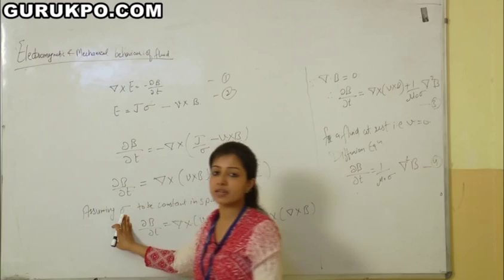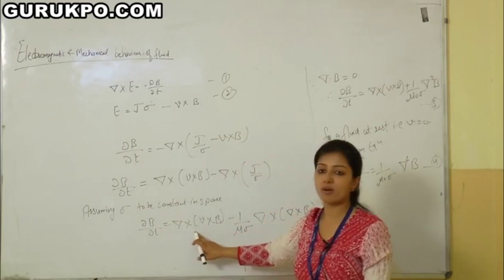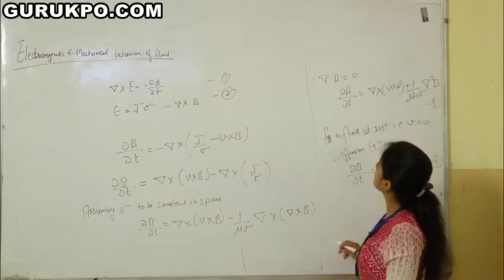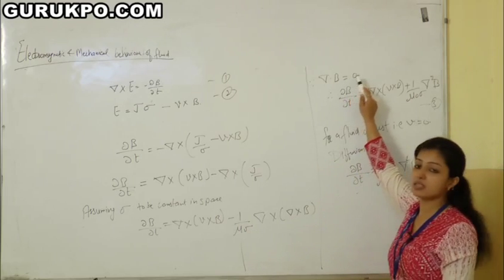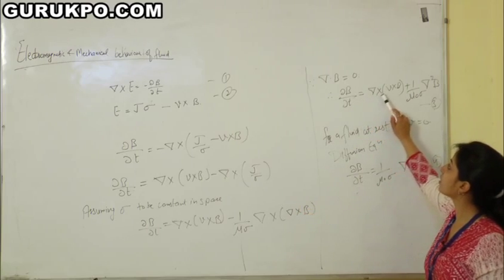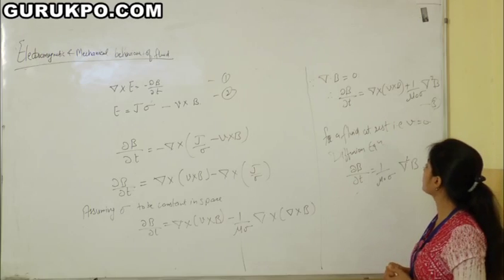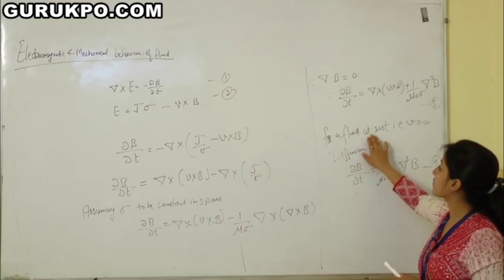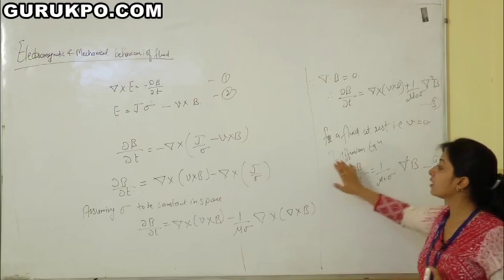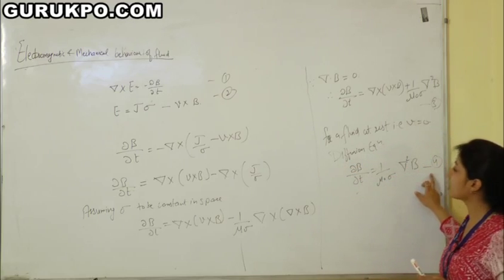Assuming electrical conductivity sigma to be constant in space, the equation becomes del·B/del·t equals curl(v×B) minus (1/mu·sigma)·curl(curl B). Since divergence of B is always zero, this simplifies to del·B/del·t equals curl(v×B) plus (1/mu·sigma)·del²B. For a fluid at rest, where v equals 0, the diffusion equation is del·B/del·t equals (1/mu·sigma)·del²B.